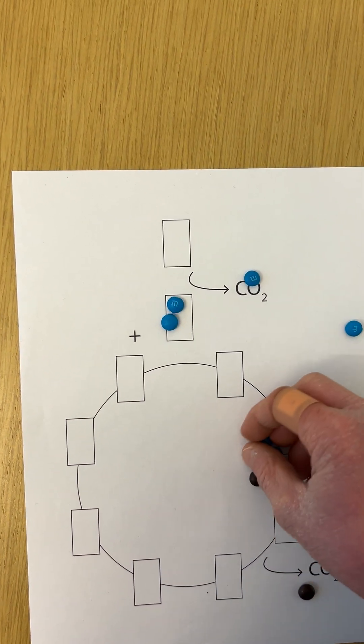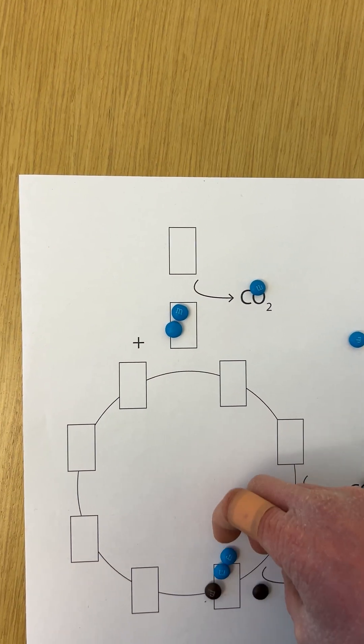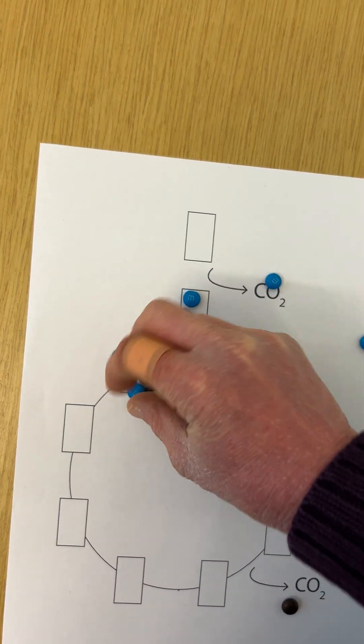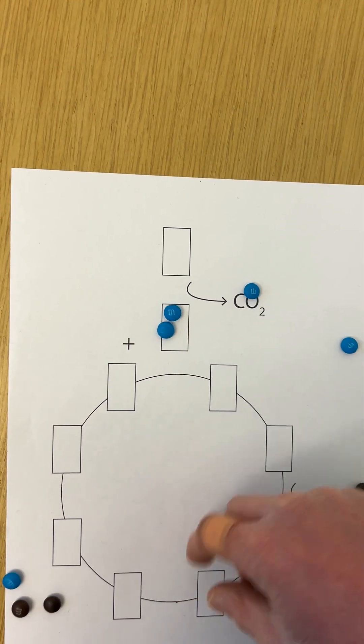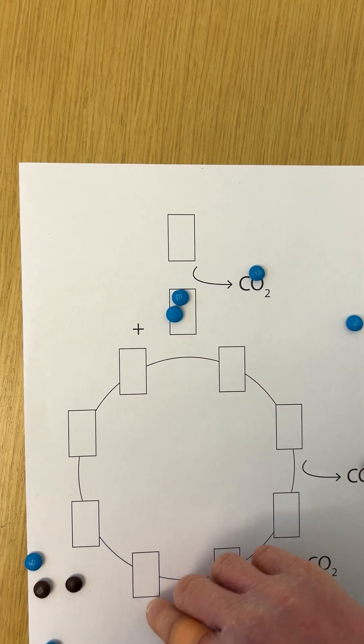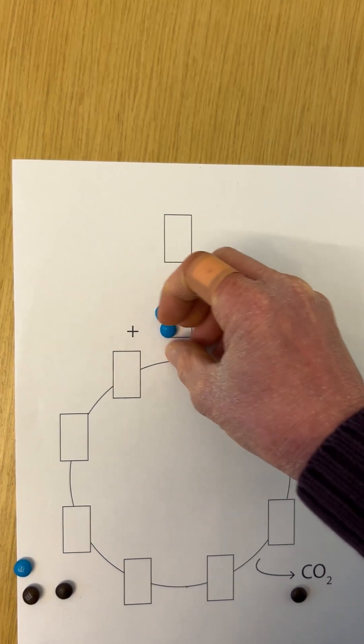If you add the carbons in at any of these points, you're able to regenerate the oxaloacetate that you need. But if you take out any of these products, then you won't have the intermediates there to add in the new ones. So we have anaplerotic reactions which regenerate the pathway intermediates by giving you those things that you need.